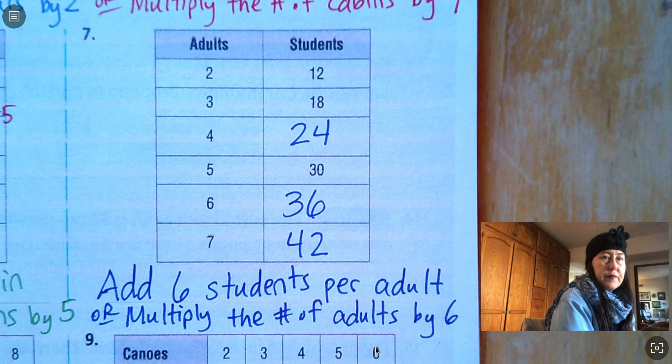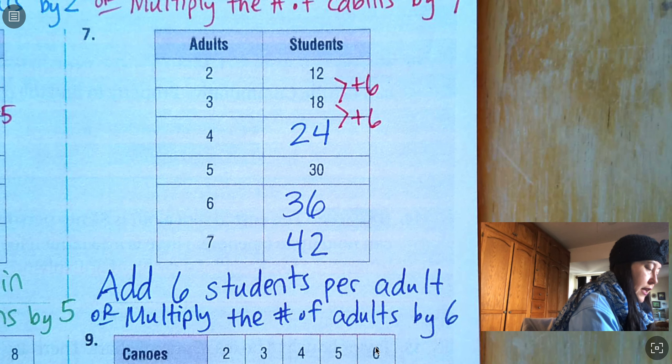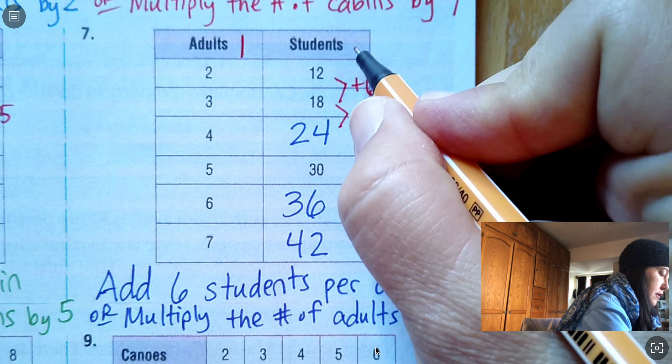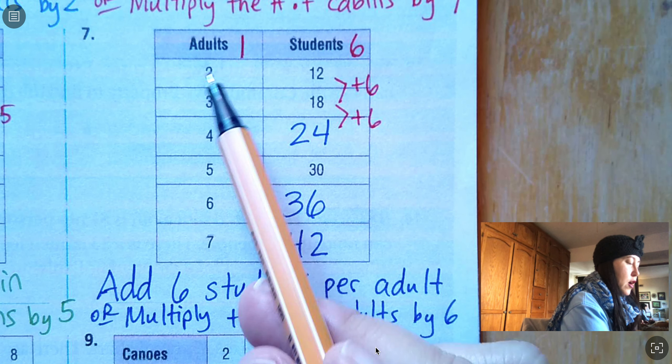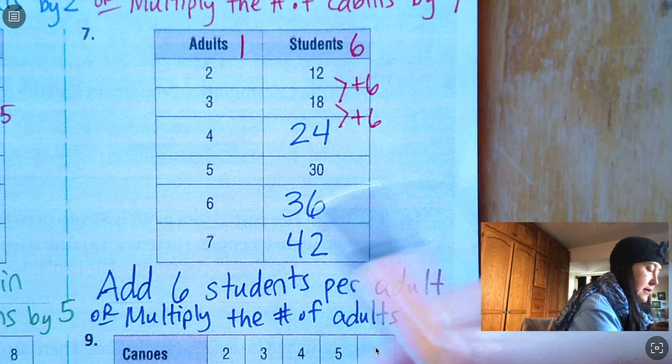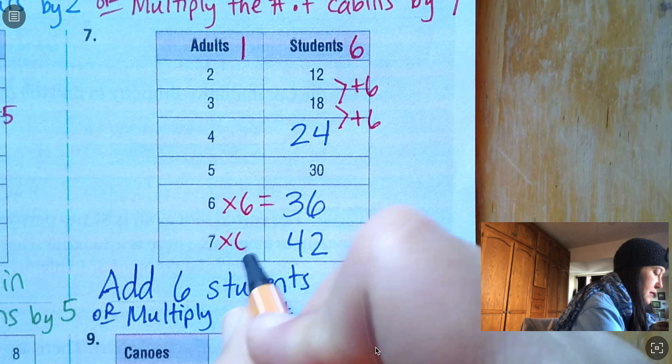Number seven. We've got the number of adults and the number of students. So kind of how many chaperones are needed, right? So add six students per adult. So every time you add one adult, you're adding six students. They didn't tell us how many students one adult could handle, but we could fill that in. If there's one adult, then there's half of this. So half of two is one, half of 12 is six. I like to kind of think that through. If they don't start with one, I like to know how much is one. Or you could multiply the number of adults by six. So six times six equals 36 or seven times six equals 42.